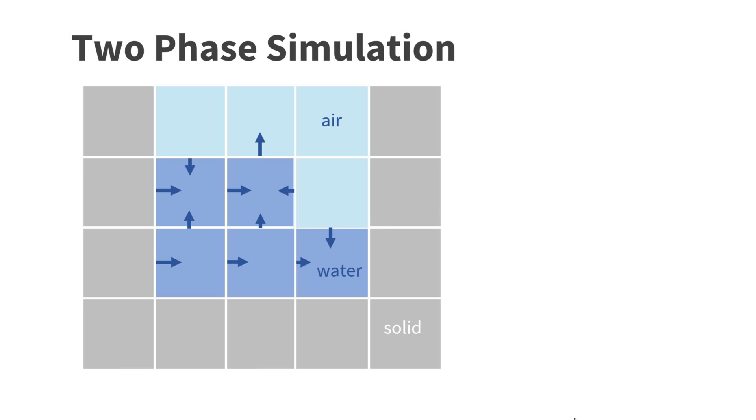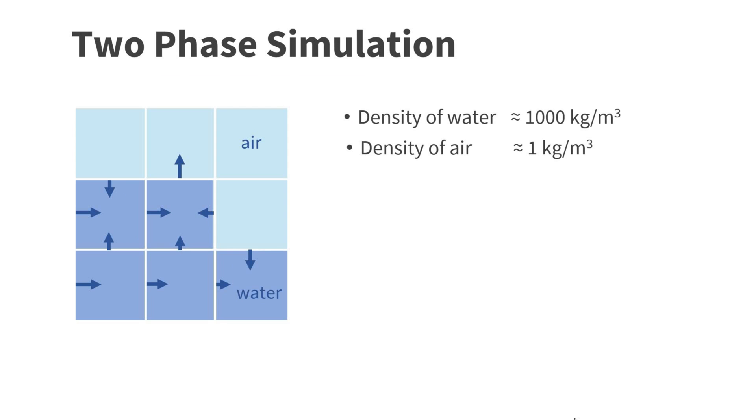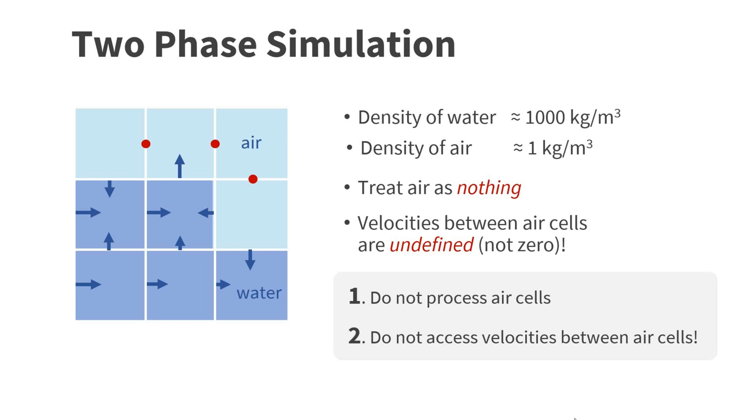This time, instead of using two types of cells, we use three types: air cells, water cells and solid cells. The density of water is about a thousand times larger than the one of air. Therefore, we simply treat air as nothing. This approximation still lets us simulate the majority of interesting effects. The two effects that will be missing are the wave generation by winds on the surface and the simulation of persistent bubbles. These effects can be added with additional techniques though. This means that the velocities between air cells are undefined. Undefined is not the same as zero because zero air velocity would stop the water from moving.